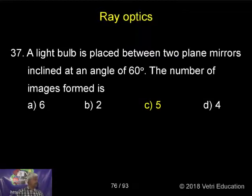A light bulb is placed between two plane mirrors inclined at an angle of 60 degrees. The number of images formed - I have given the two formulas. N is equal to 360 by theta minus 1, or 360 by theta.